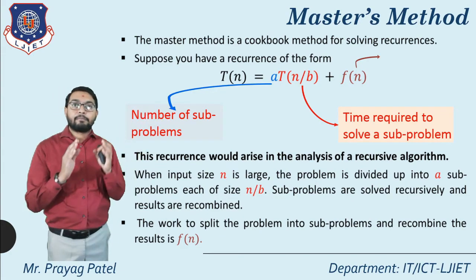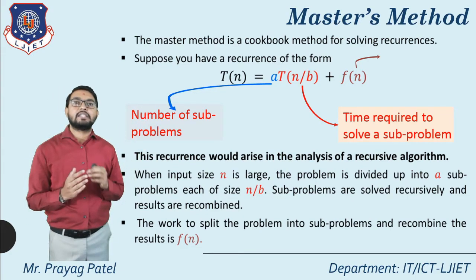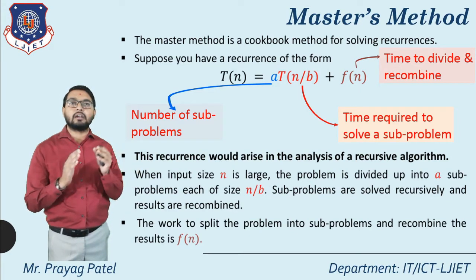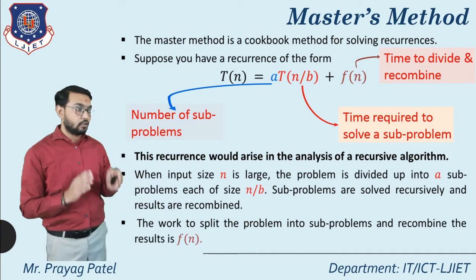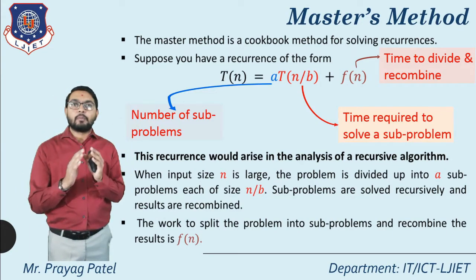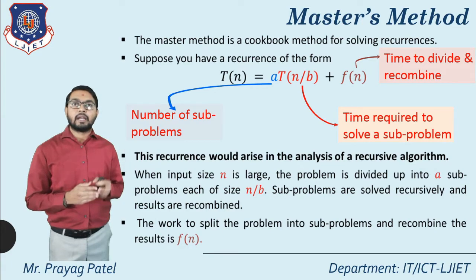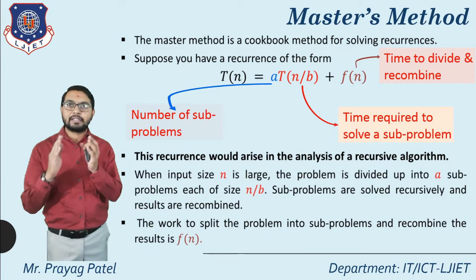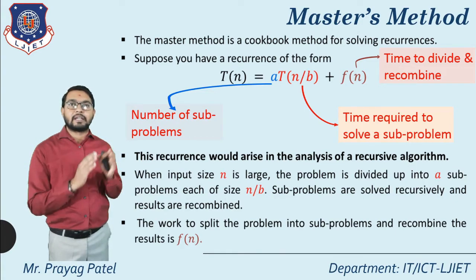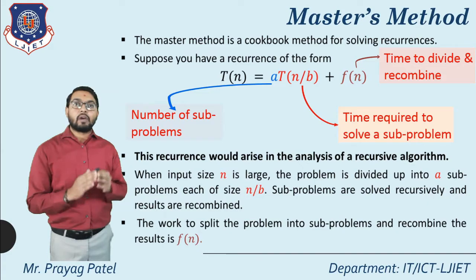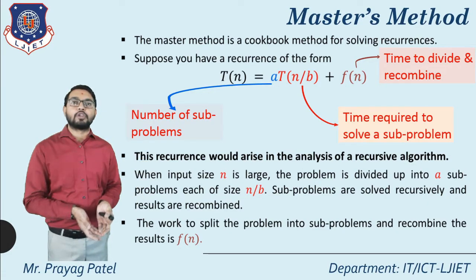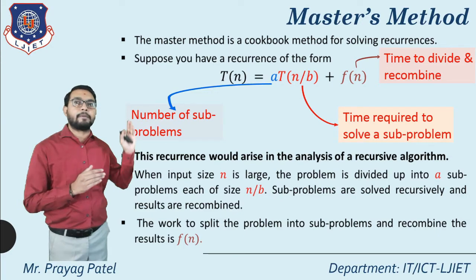The third part is plus f(n). f(n) means the time to divide and recombine the problem. Originally the problem is of size n, then we divide it into n/2 form. The number of subproblems is 'a', the time to solve each subproblem is T(n/b), and the time to divide and recombine is f(n).